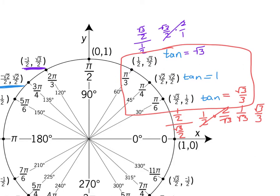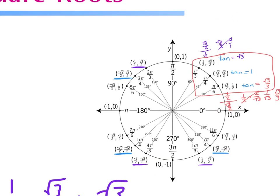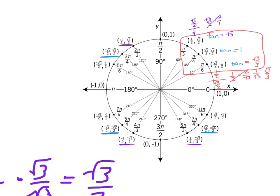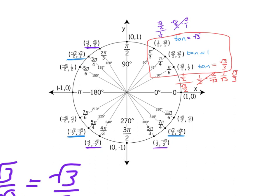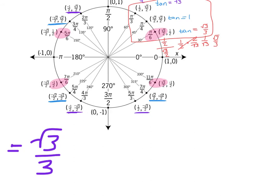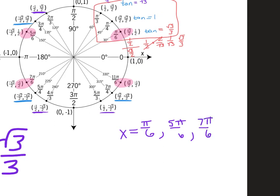So if I'm looking on the unit circle where tangent is ±√3/3, which 4 angles give me √3/3? That's where x is √3/2, which occurs at π/6, 5π/6, 7π/6, and 11π/6. Your answers are x = π/6, 5π/6, 7π/6, and 11π/6. Tangent is the only one requiring a bit of extra thinking, but if you memorize this, as soon as it says tangent = √3/3, you know all the ones where the x value is 1/2.